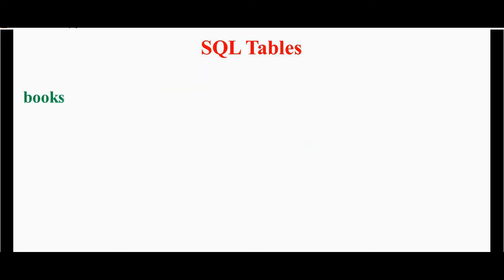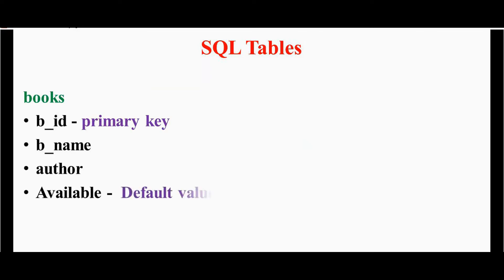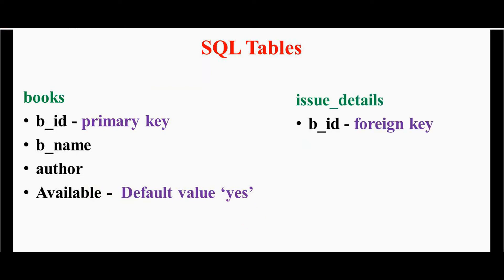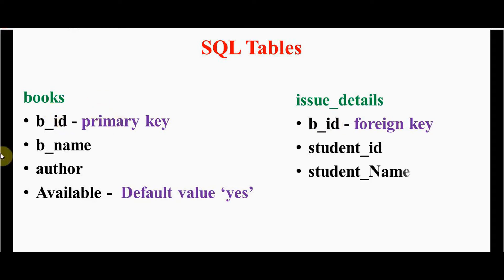We need two SQL tables. The first table is the books table. Here I have book_id as the primary key, book_name, author of the book, and one more column called 'available' — the default value of available is set to 'yes'. The next table is called issue_details. Here the book_id is the foreign key, referencing values in the parent table books. Then we have student_id and student_name.